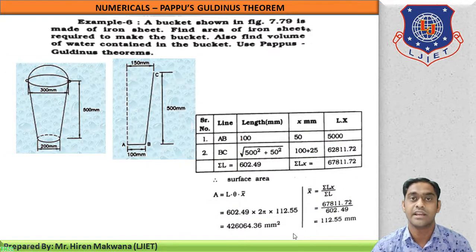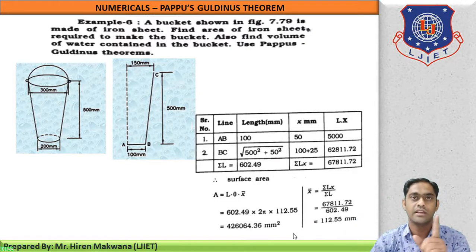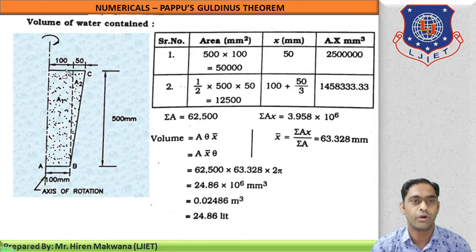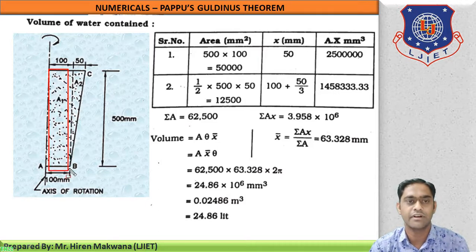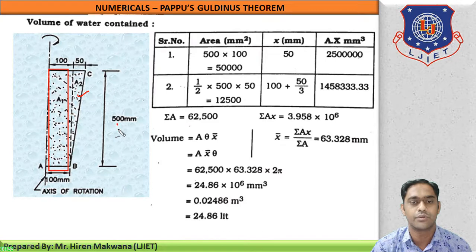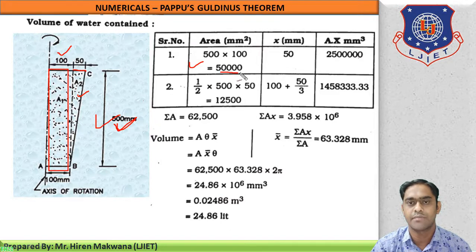That completes example number 6 where we calculated the area of iron sheet required to make the bucket. Now we need to find the volume of water contained in the bucket. For this, an area must be revolved about the rotational axis. The shape consists of a rectangle and a triangle. The rectangle has dimensions 100 mm horizontally and 500 mm vertically, giving an area of 50,000 mm squared.